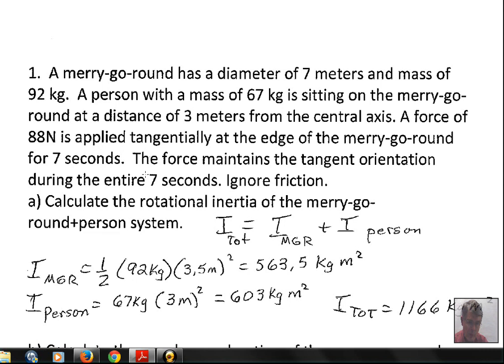Ignoring friction, we're going to calculate first the rotational inertia of the merry-go-round and person system. The total rotational inertia has contributions from the disc of the merry-go-round and from the person. The merry-go-round is calculated with I = ½MR² for a filled-in disc.